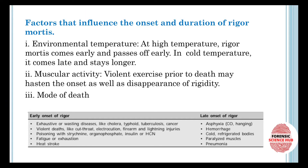There are many factors that affect rigor mortis, but the major factors that influence the onset and the duration are the environmental temperature and the muscular activity. Along with that, there are other factors also, which are discussed in this video.